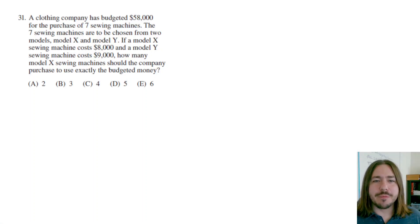Hey y'all, welcome back. Number 31 says a clothing company has budgeted $58,000 for the purchase of seven sewing machines. Wow, those are some expensive sewing machines. The seven sewing machines are to be chosen from two models, Model X and Model Y. If a Model X sewing machine costs $8,000 and a Model Y sewing machine costs $9,000, how many Model X sewing machines should the company purchase to use exactly the budgeted money?